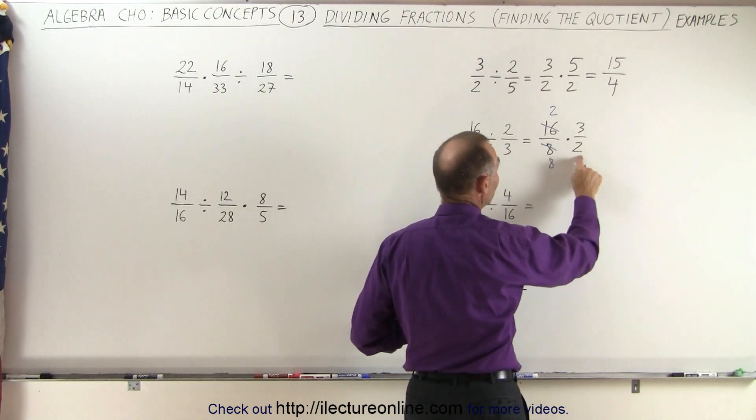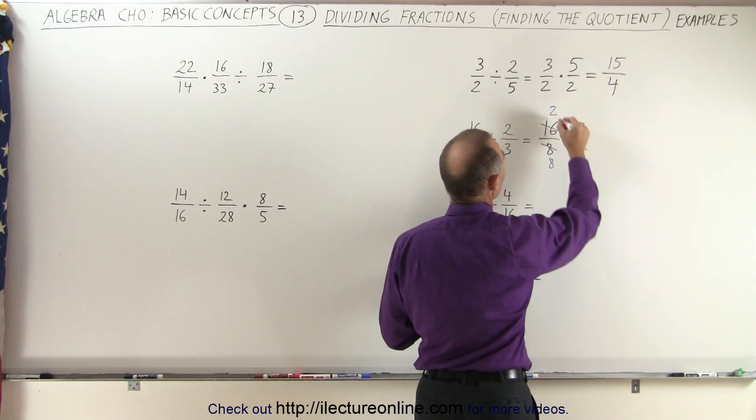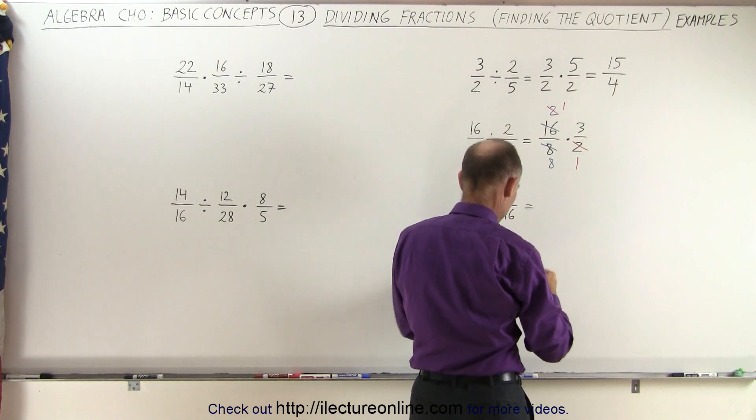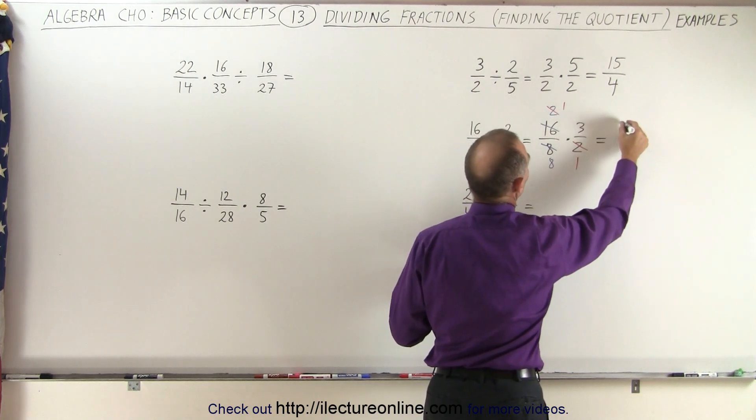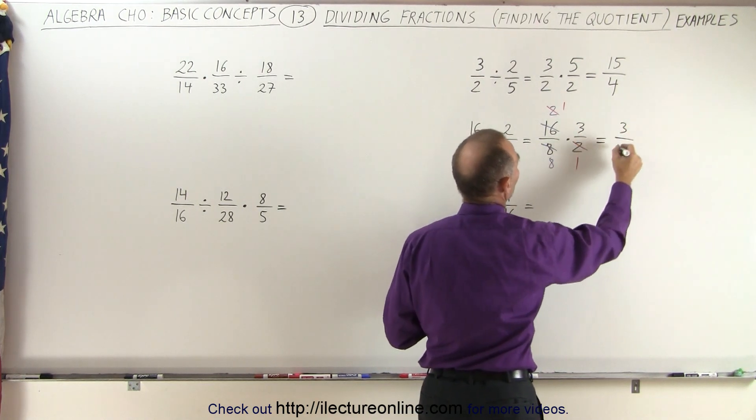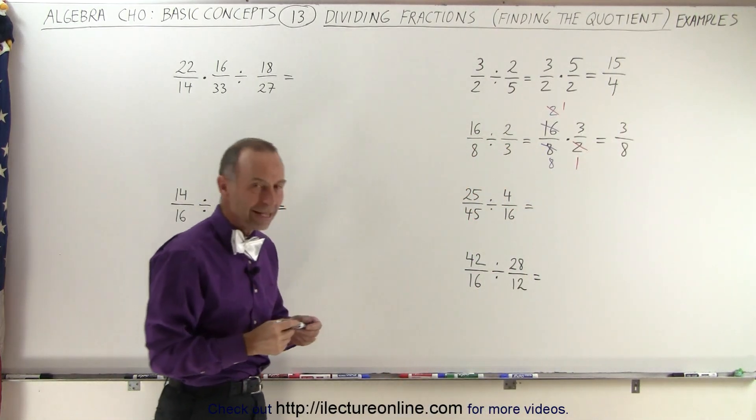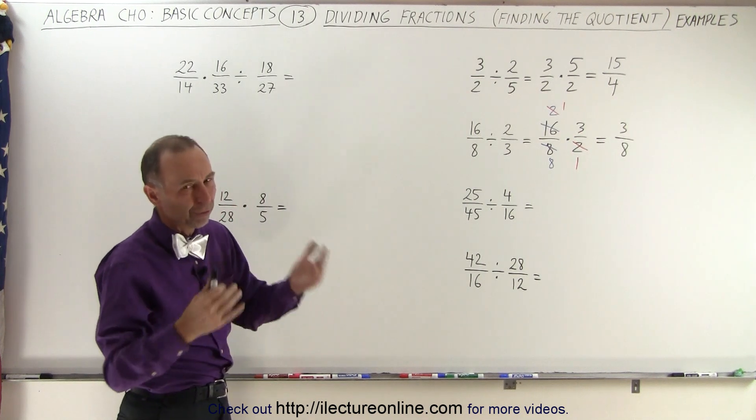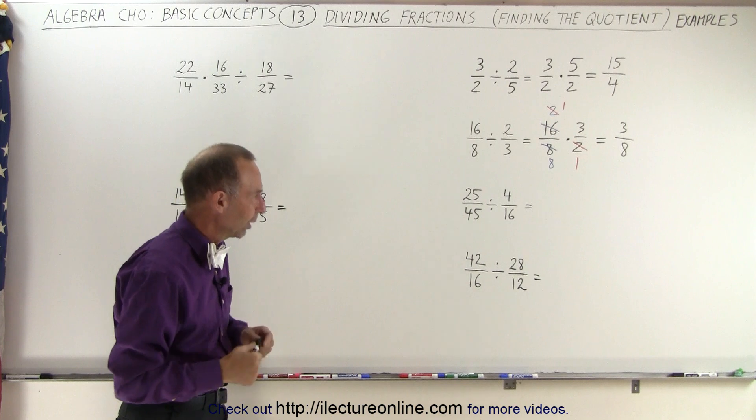Then you realize that we have a 2 in the denominator and we have 2 in the numerator, so this 2 becomes a 1, when that 2 becomes a 1, and now the result is that we have in the numerator 1 times 3, which is 3, and 8 times 1, which is 8, so the result is 3 eighths. So wait until we turn it into a multiplication before you start simplifying. That is a good rule to stick with.